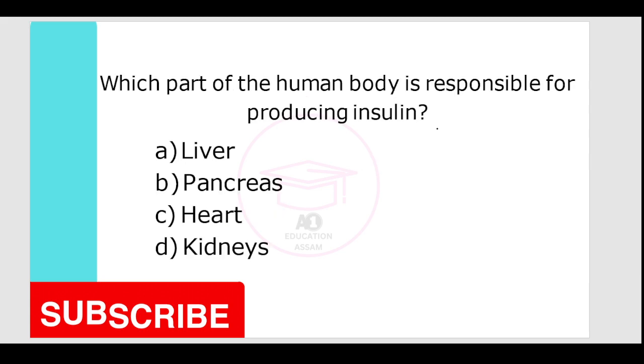Which part of the human body is responsible for producing insulin? Options are liver, pancreas, heart, or kidneys. Your correct answer is pancreas.